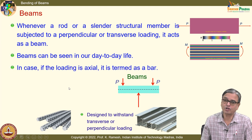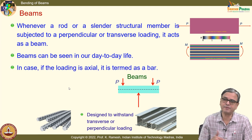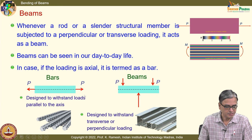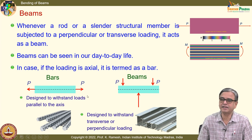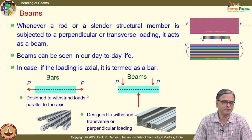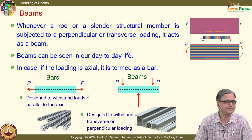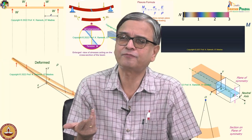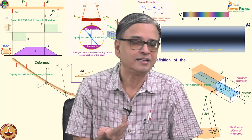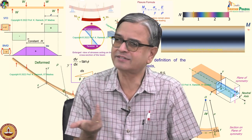I can have a column which is horizontal, a beam that is vertical. If the loading is axial, it is termed as a bar. When we were looking at axial load, we never worried about the cross section. I simply said: I have a lower force acting like this, and let us define force divided by area as stress.